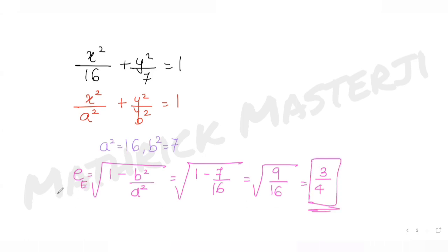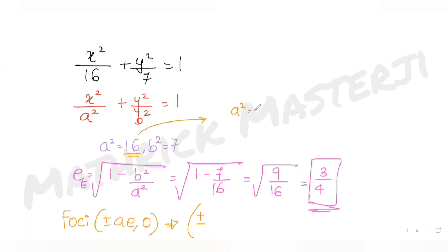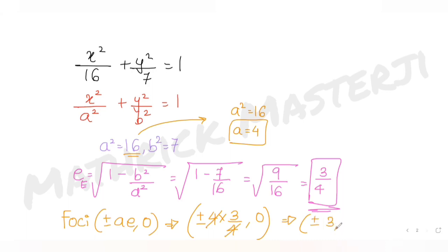The eccentricity of the ellipse is 3/4. The foci are at (±ae, 0). Since a² = 16, a = 4, and e = 3/4, the foci points are (±4 × 3/4, 0) = (±3, 0).